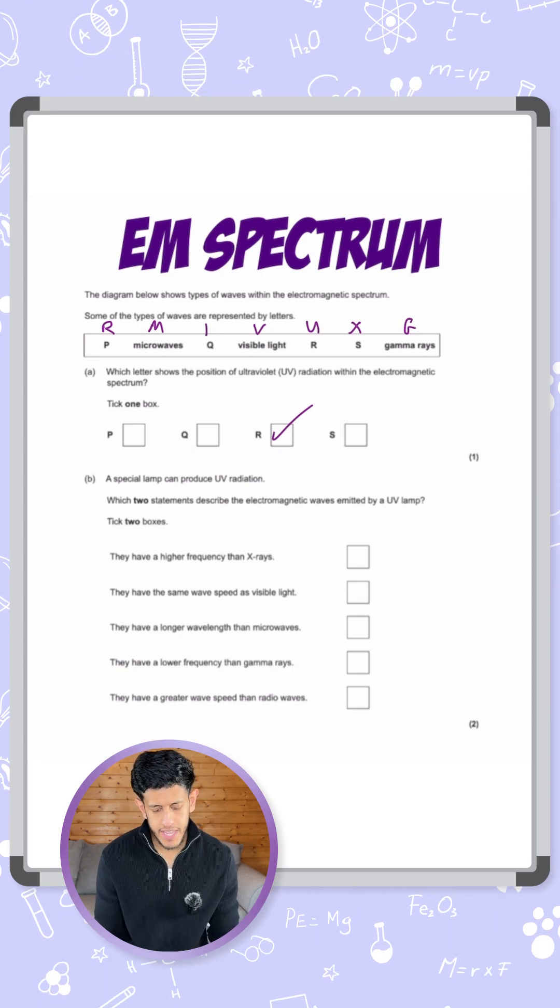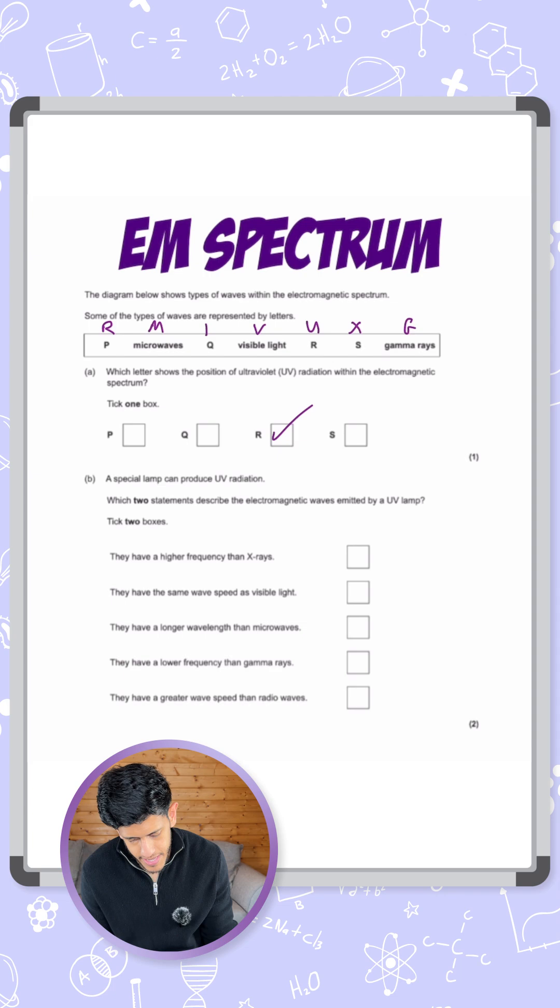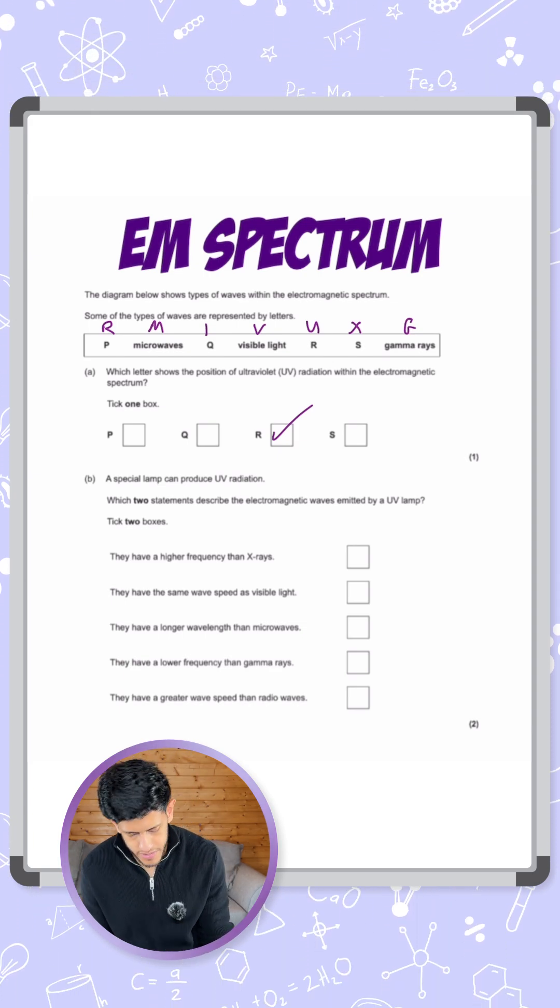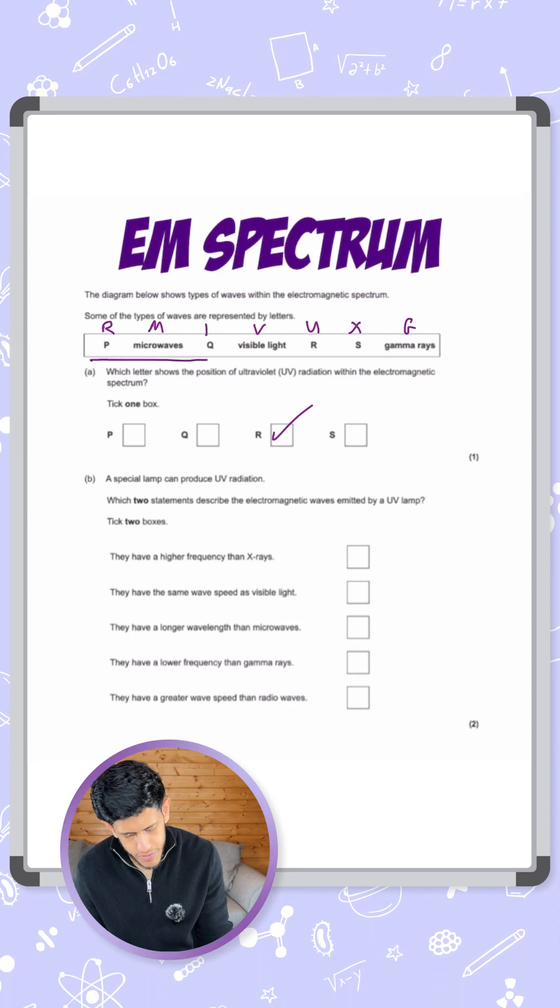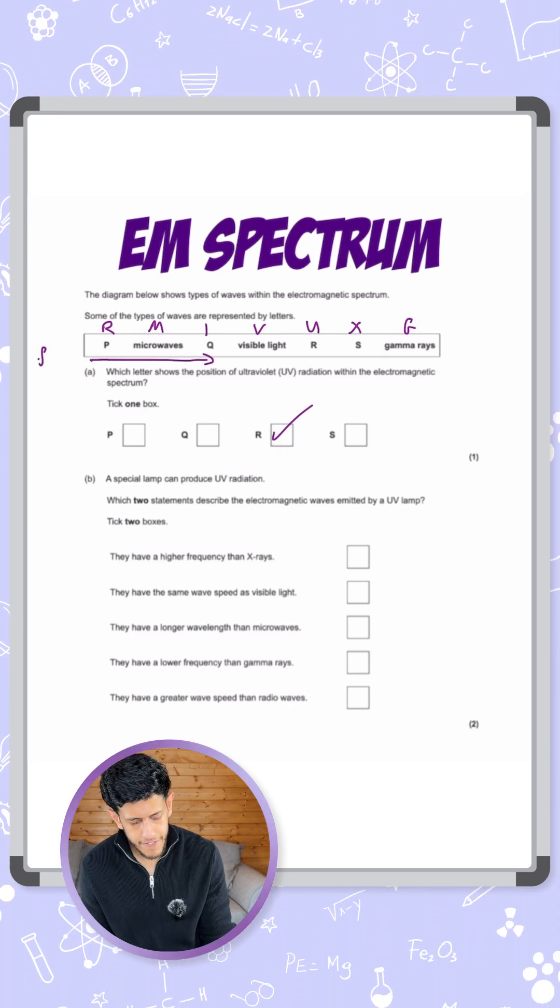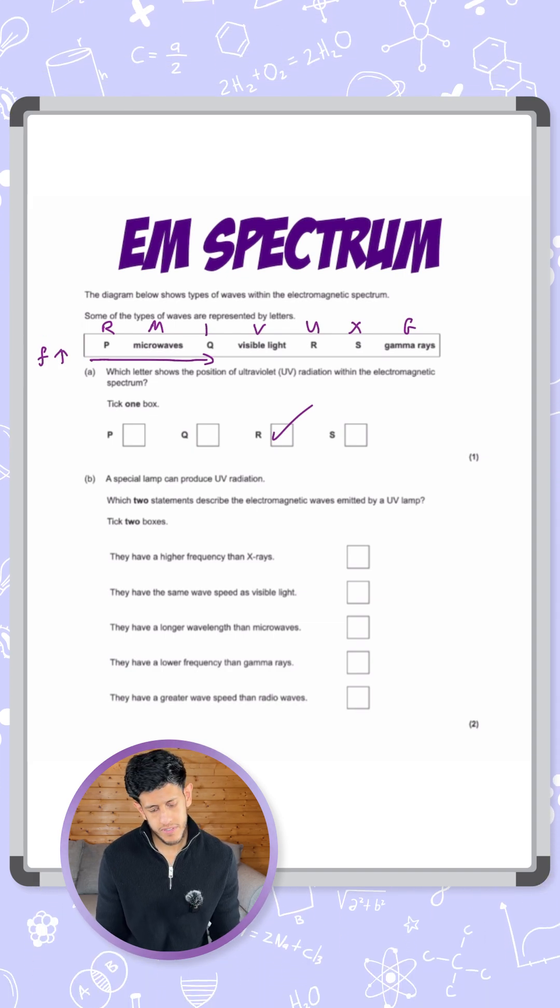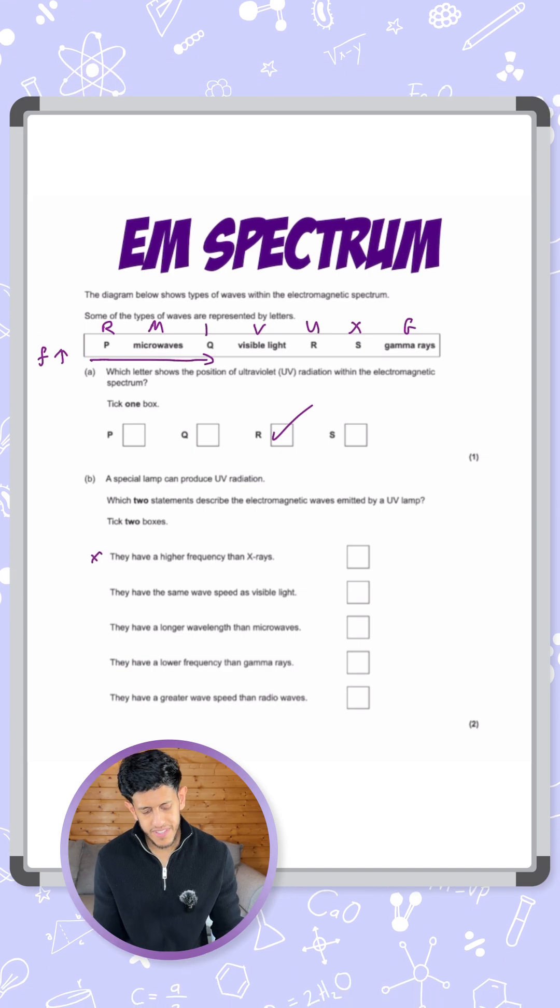They have a higher frequency than x-rays. If we go from the order of the spectrum, we can see that the highest frequency is gamma and then the lowest is radio waves. So if we're going for increasing frequency, that goes from left to right in the spectrum. I'll say F increases over here. So a higher frequency than x-rays? No it's not. So that is not true for UV. I won't use that as the answer.